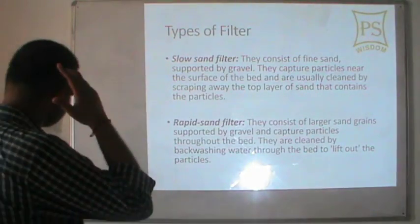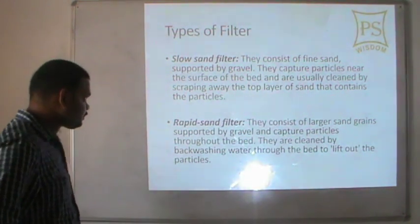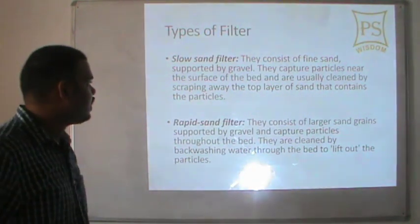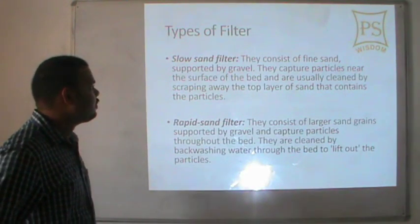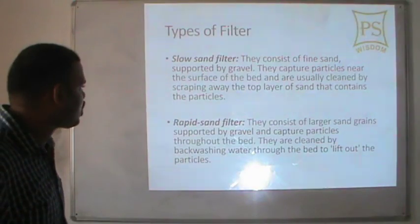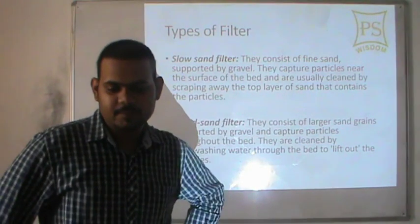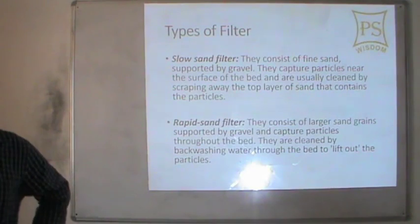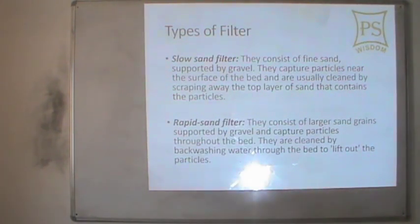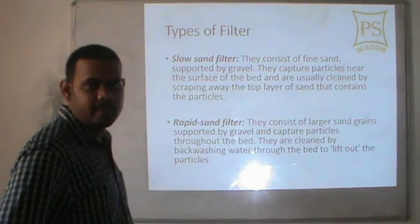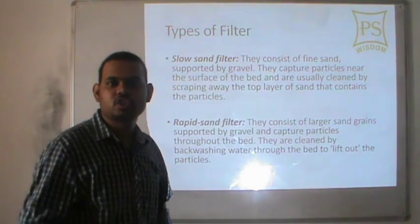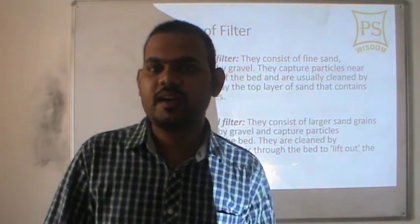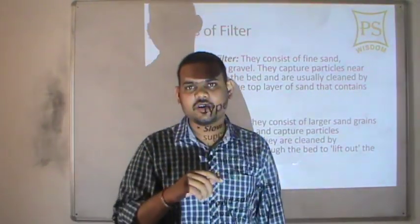There are two types of filters: slow sand filter and rapid sand filter. A slow sand filter consists of fine sand supported by gravel; it captures particles near the surface of the bed and is usually cleaned by scraping away the top layer of sand. A rapid sand filter consists of larger sand grains supported by gravel and captures particles throughout the bed; it is cleaned by backwashing water through the bed to lift out the particles.